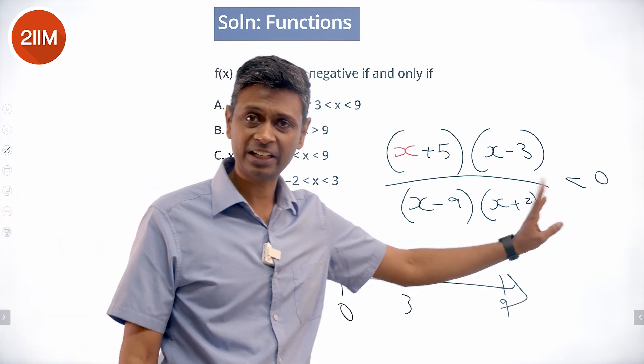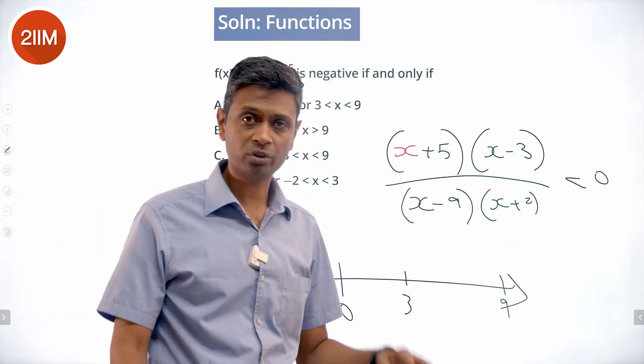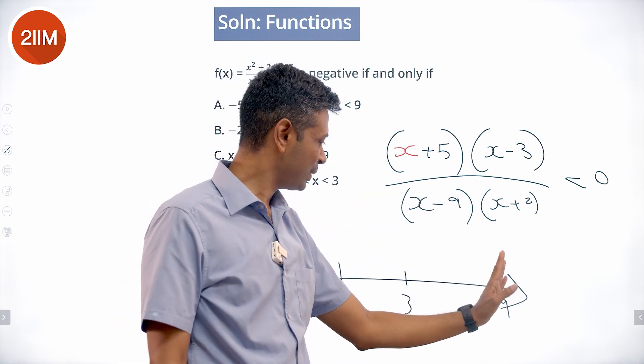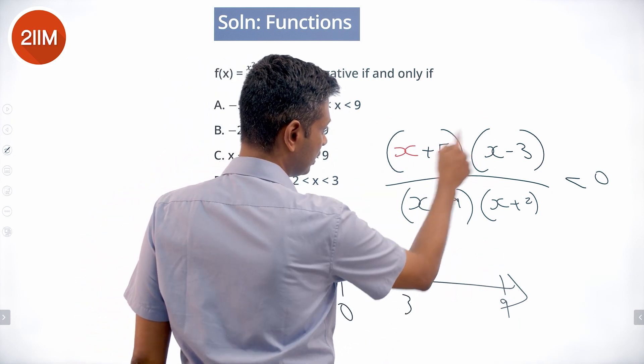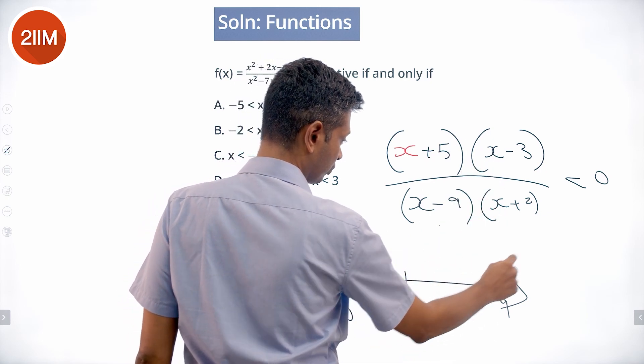If x were greater than 9, all factors would be positive, so the expression is positive. If x is less than 9 but greater than 3, then (x - 9) would be negative while the other three factors are positive, so the expression would be negative.